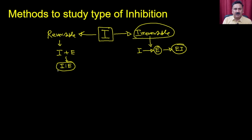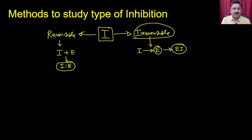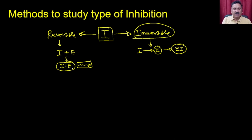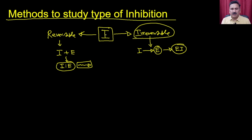Since the complex is reversible, you can change conditions such as pH, and the inhibitor will no longer bind the enzyme — or the enzyme-inhibitor complex can be broken down by other treatments, allowing the enzyme to reactivate. There are many methods to understand whether inhibition is reversible or irreversible.